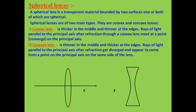A spherical lens is a transparent material bounded by two surfaces, one or both of which are spherical. We have two types of spherical lenses: convex lenses and concave lenses.